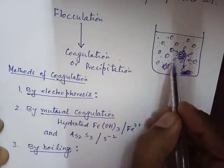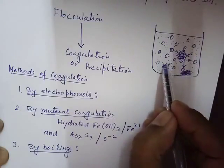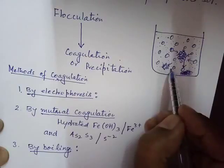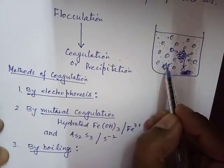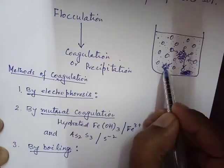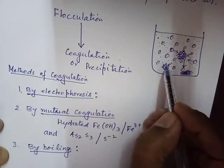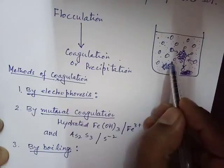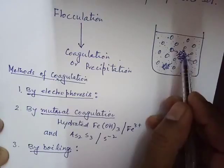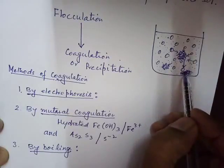By boiling, the colloidal particles lose their charge. The charge adsorbed at their surface is dissolved and comes out into the solution. The charge on them is lost to the solution, and they come together to form larger aggregates. Under the force of gravity they will settle down.